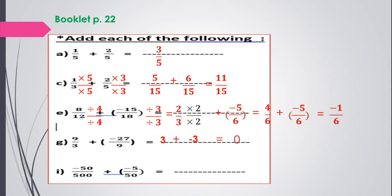Put this rational number in its simplest form. For the first number, remove the trailing zeros and divide up and down by 5. For the second rational number, also divide up and down by 5. The first number becomes negative 1 over 10 and the second number also becomes negative 1 over 10. Same sign and same denominators, so add: the answer is negative 2 over 10. Not in simplest form yet, so divide up and down by 2, giving negative 1 over 5.